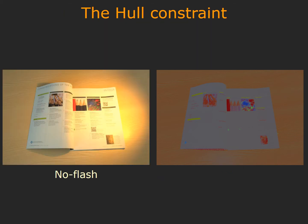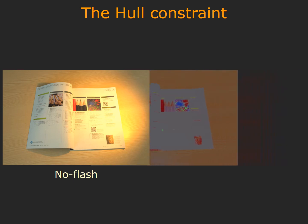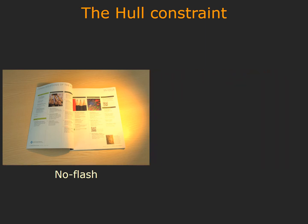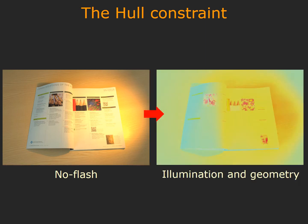Given the per-pixel reflectance information, we can remove it from the non-flash image. We denote the resulting image as a constraint that relates the light source spectra and their relative per-pixel shading to the observed intensities in the no-flash photograph. We name this constraint as the Hall constraint.